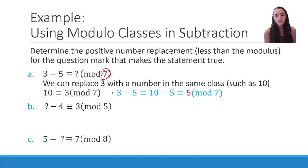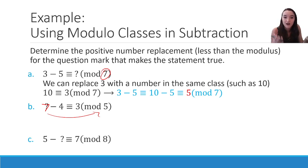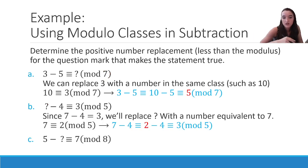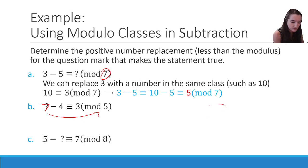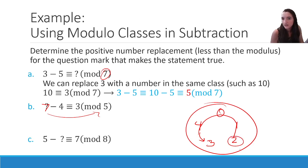How about: question mark minus 4 ≡ 3 in mod 5? Normally, the answer would be 7, but 7 is not properly in mod 5. So I shift down by 5: 7 minus 5 gives 2. So 2 minus 4 is congruent to 3 in mod 5. Let's verify visually with a mod 5 clock: 0, 1, 2, 3, 4. Working backwards from 3, I need to add 4 going the forward direction, and I land on 2. So 2 is the answer.